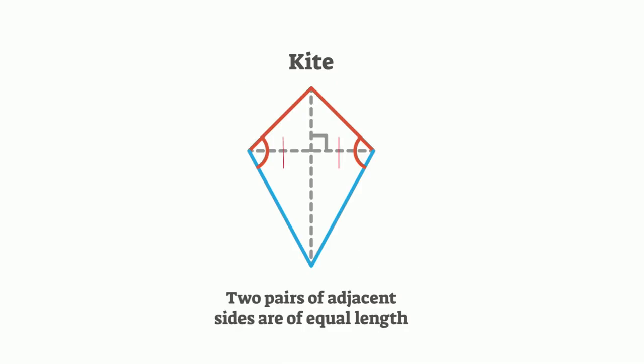The diagonals of a kite are perpendicular to one another, which results in the diagonal creating right angles. The longer diagonal is also an angle bisector to the top and bottom angles.